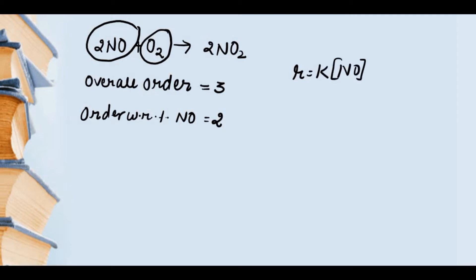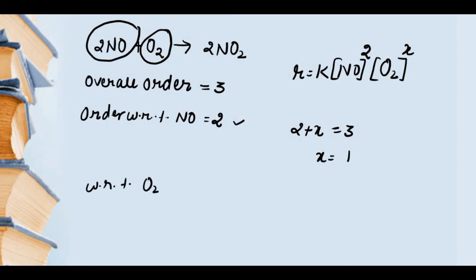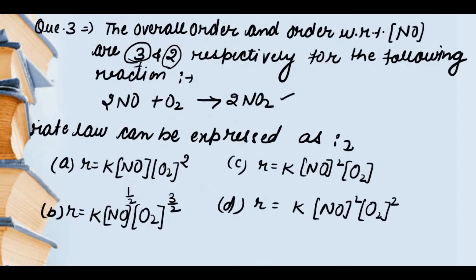NO ki power par jo stoichiometry hai aur O₂ ki kuch power par depend karega. Yahaan pe order with respect to NO is 2, aur overall order 3 diya gaya hai. Iska matlab: 2 + x = 3, toh x ki value 1 hogi. Matlab with respect to oxygen jo order hoga wo 1 ho jayega. So option (c) is correct — NO ki power 2 aur oxygen ki power 1 — yahi rate law ki equation hai.